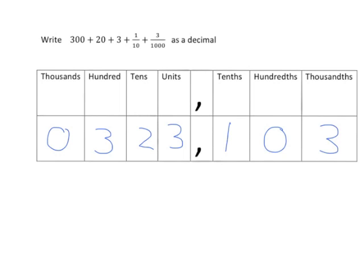So the number we have is 323.103, but obviously we don't write the zero right at the start, so 323.103 is the answer.